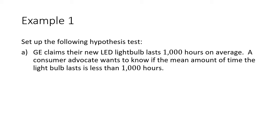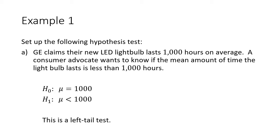Our null hypothesis is what's already given to us: H₀ is that mu, the mean, is 1,000 hours. We have to assume that's true from the beginning. The researcher's alternative hypothesis, H₁, is that mu is actually less than 1,000 hours. When we do this type of test where it's less than, this is going to be a left-tail test — we're trying to show that the probability of the mean being less than 1,000 is statistically significant.